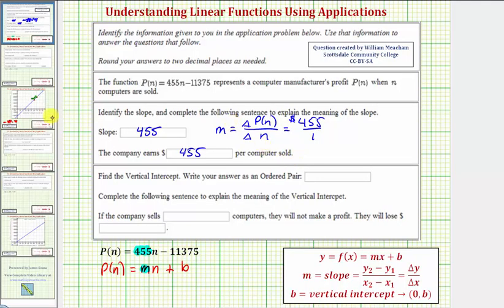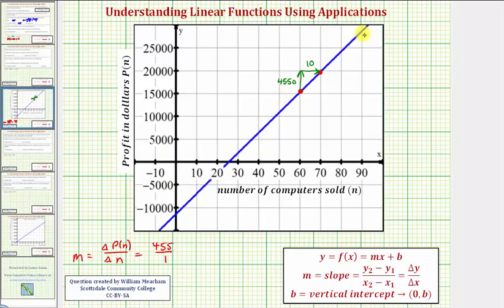Let's look at this graphically. Here's a graph of our function p of n. Because the horizontal axis is scaled by tens, though, let's change the form of our slope. Instead of 455 over one, let's multiply it by ten over ten, and write the slope as 4550 over ten. Now if we look at this graphically, if we select these two points here, if we move from the point on the left to the point on the right, notice how we have to go up 4550 units and right ten units, which means the profit will increase by 4550 dollars if ten additional computers are sold.